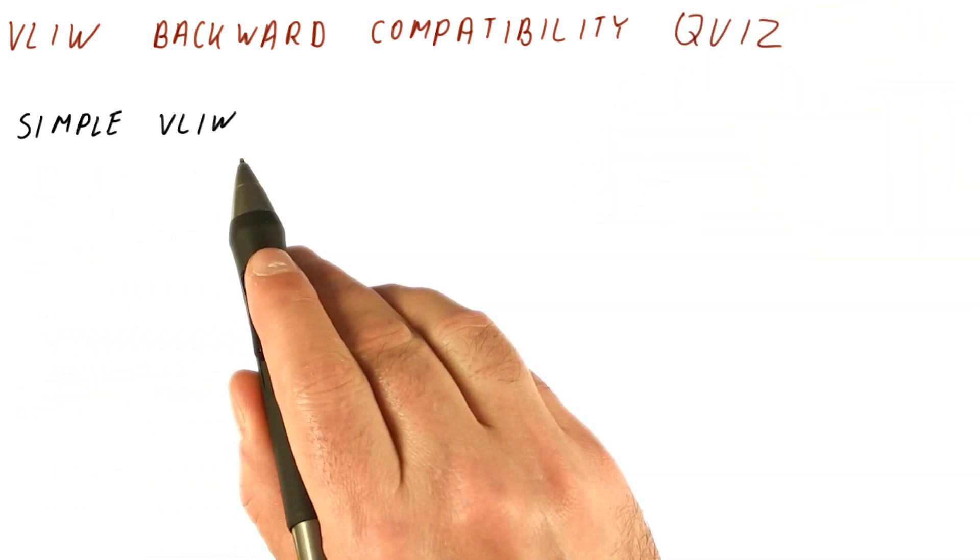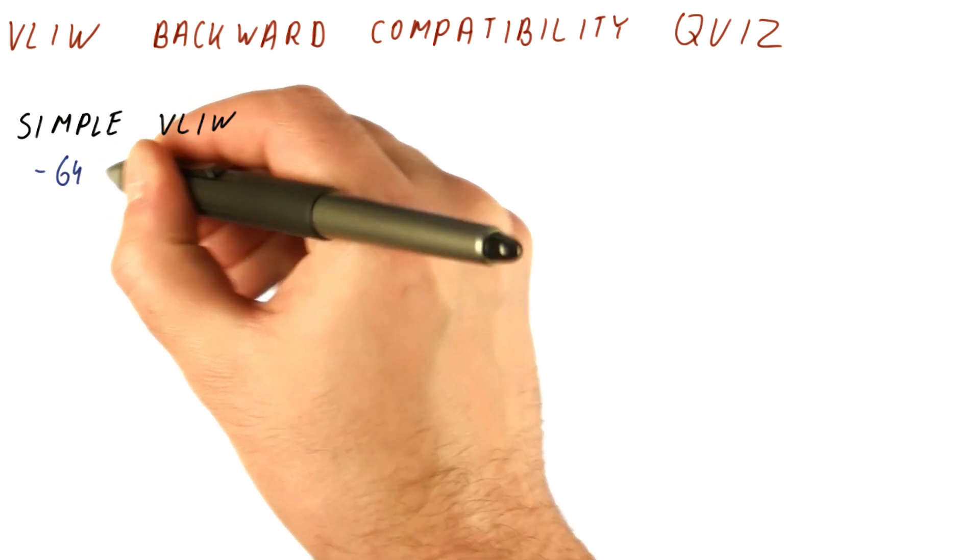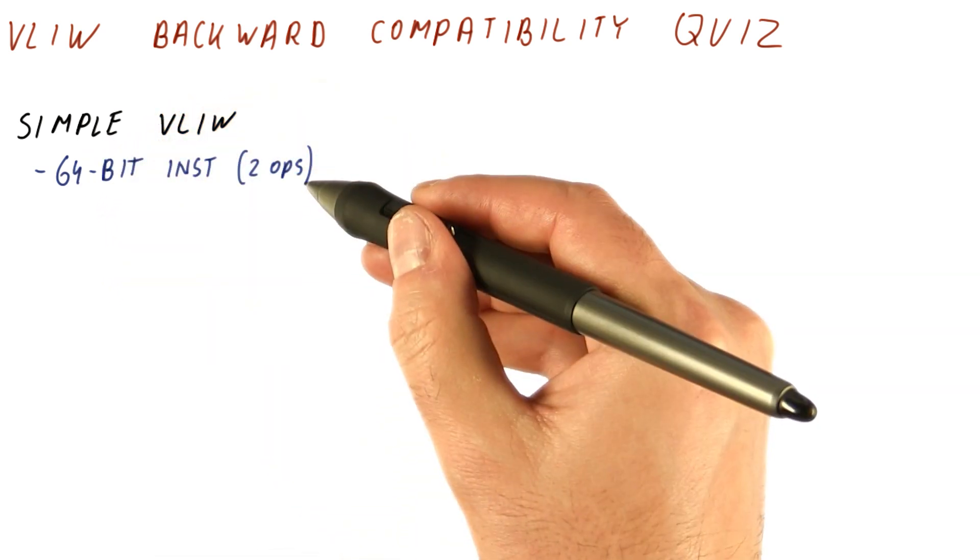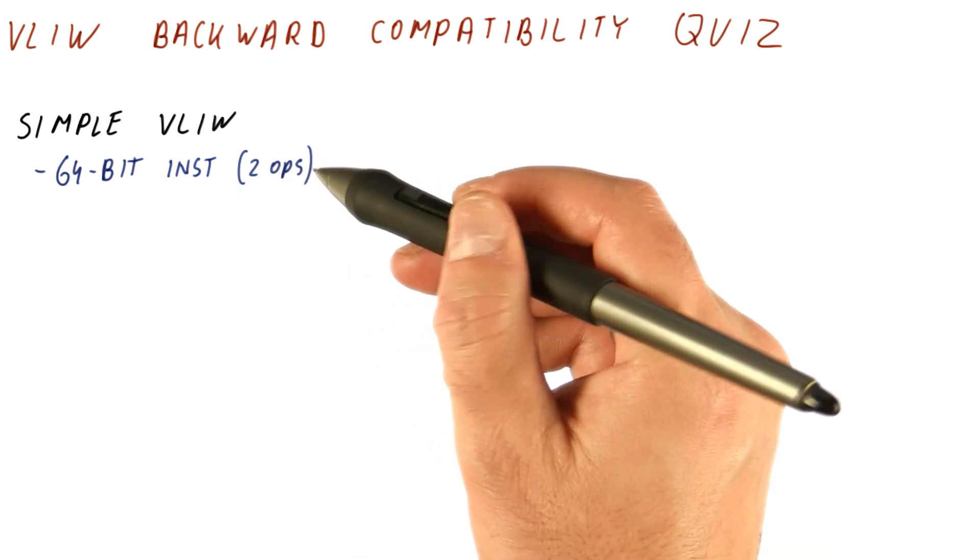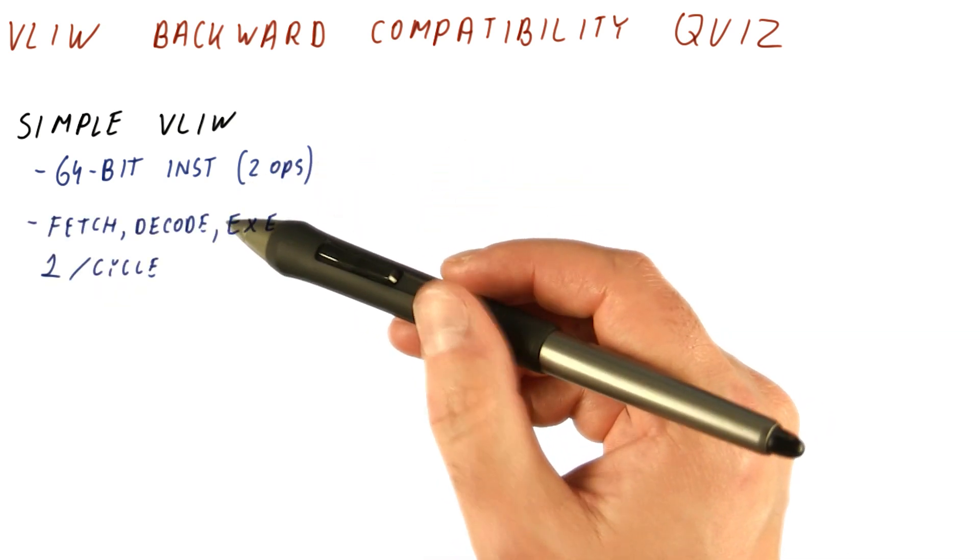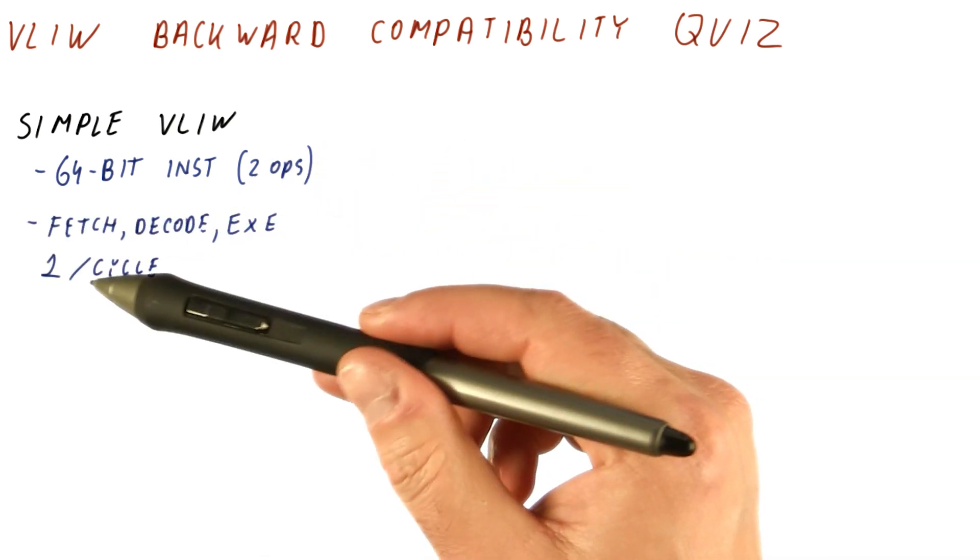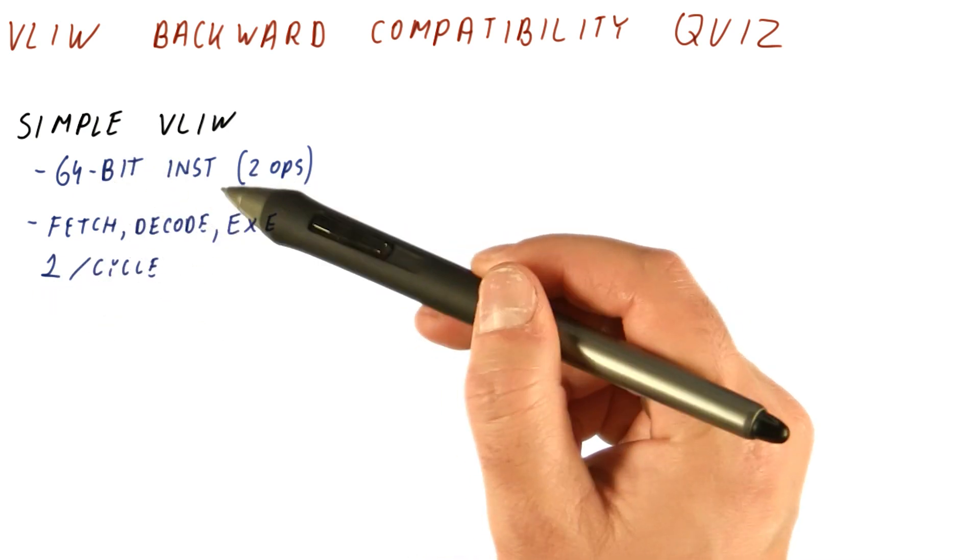Let's say we have a simple VLIW processor. It has a 64-bit instruction that specifies two operations, roughly equivalent to two normal instructions. This processor fetches, decodes, and executes one of these 64-bit instructions per cycle.